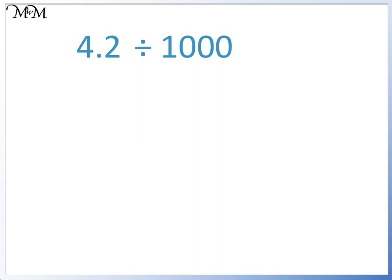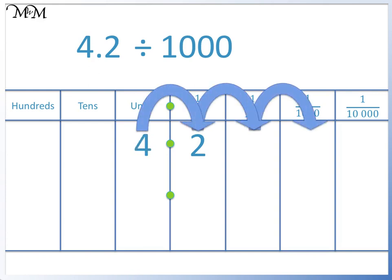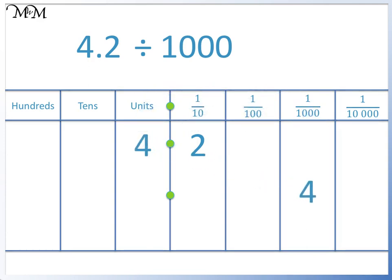4.2 divided by 1000. We move the 4 three places to the right: 1, 2, 3. We have moved the 4 to the thousandths column. The 2 will follow, and we place it in the ten-thousandths column. We write a zero in the units column, and we put two zeros in the spaces between the decimal point and the 4. 4.2 divided by 1000 equals 0.0042.